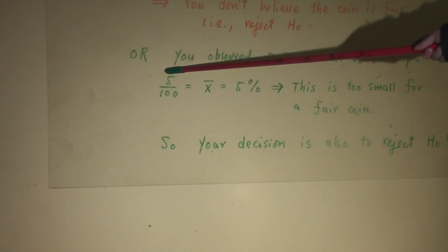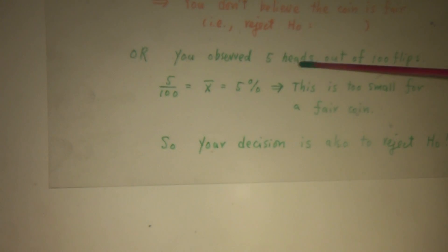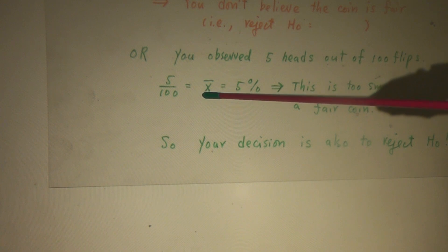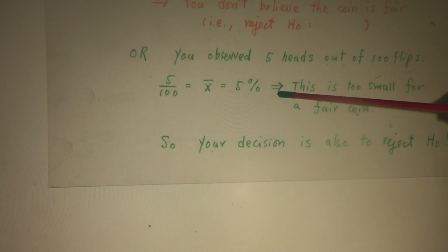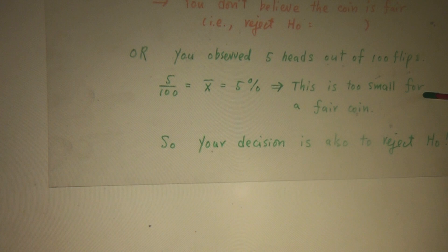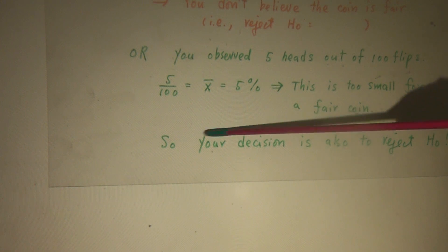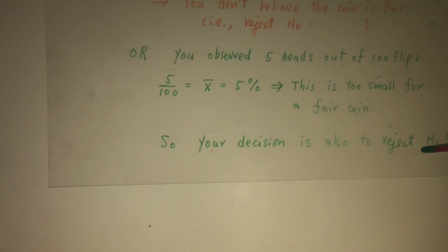Or, you observe five heads out of 100 flips. The sample percentage is only five percent. This is too small for a fair coin. So your decision is also to reject H-naught.